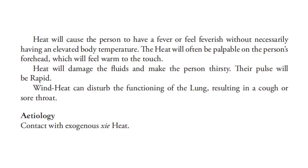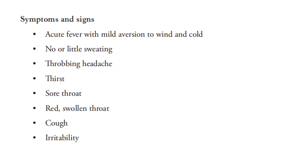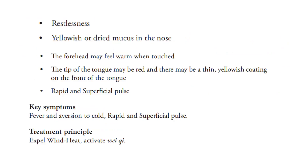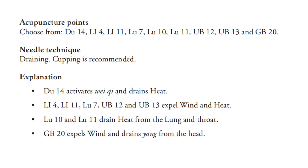Etiology: contact with exogenous pathogenic heat. Symptoms and signs: acute fever with mild aversion to wind and cold; no or little sweating; throbbing headache; thirst; sore throat; red swollen throat; cough; irritability; restlessness; yellowish or dried mucus in the nose; forehead may feel warm when touched; tip of the tongue may be red with a thin yellowish coating on the front; rapid and superficial pulse. Key symptoms: fever and aversion to cold; rapid and superficial pulse. Treatment principle: expel wind heat and activate wei qi. Acupuncture points: choose from DU-14, LI-4, LI-11, LU-7, LU-10, LU-11, UB-12, UB-13, and GB-20. Needle technique: draining. Cupping is recommended.